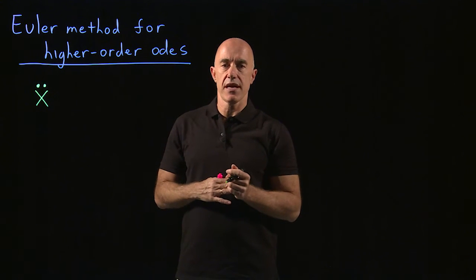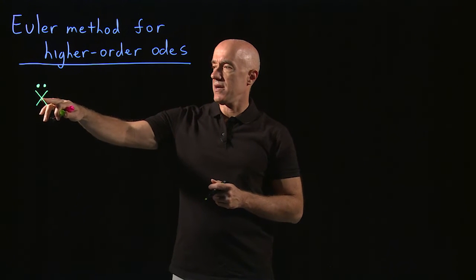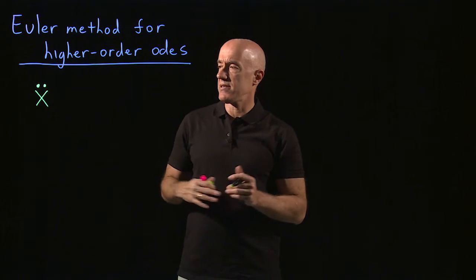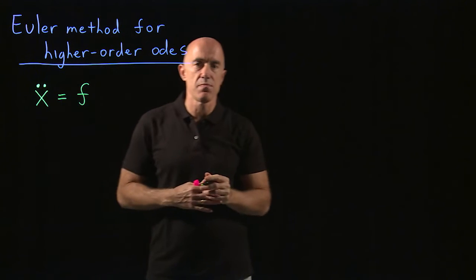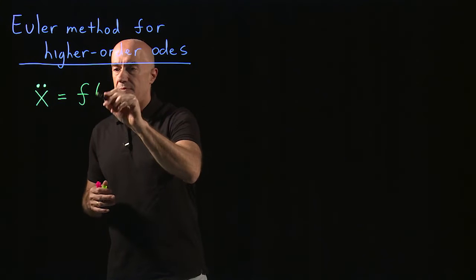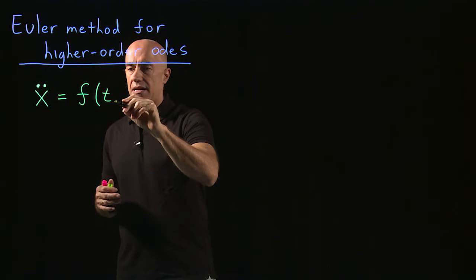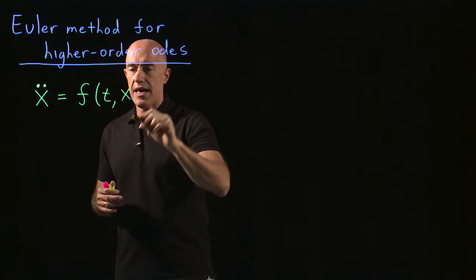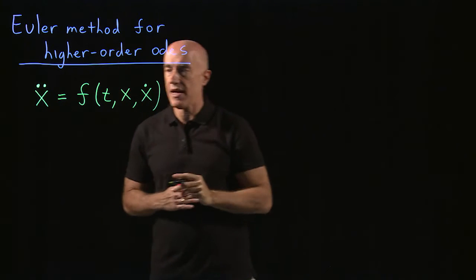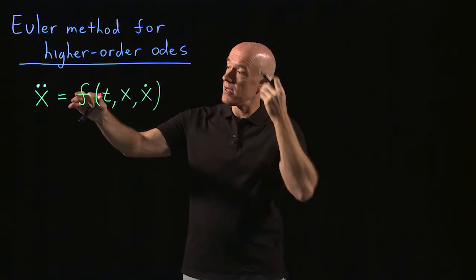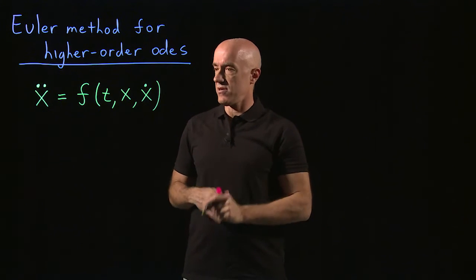So the second order equation can be written in some general form, where we have the second derivative of x is equal to some function, which could be anything, that depends on the independent variable t, depends on x, and it depends on the first derivative of x, which I write here as x dot. So this is the general second order equation for x, which is a function of time.